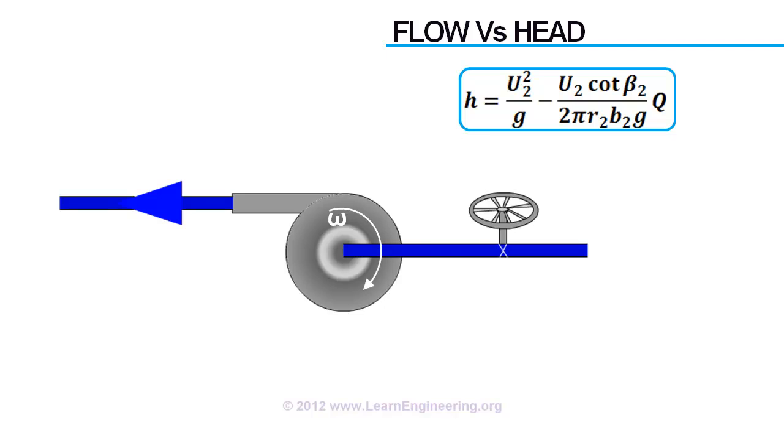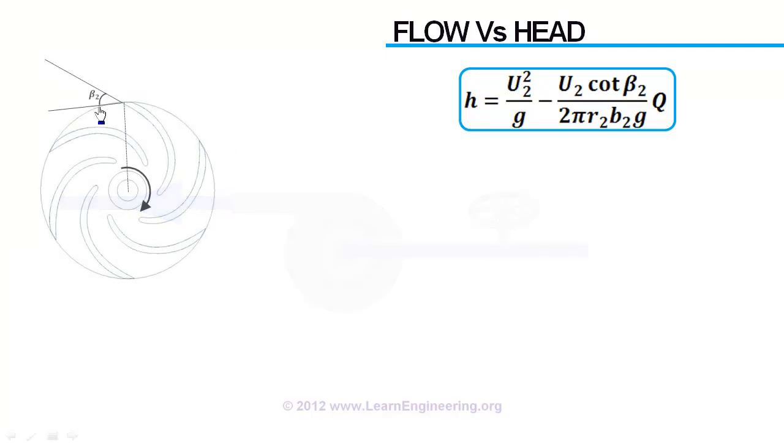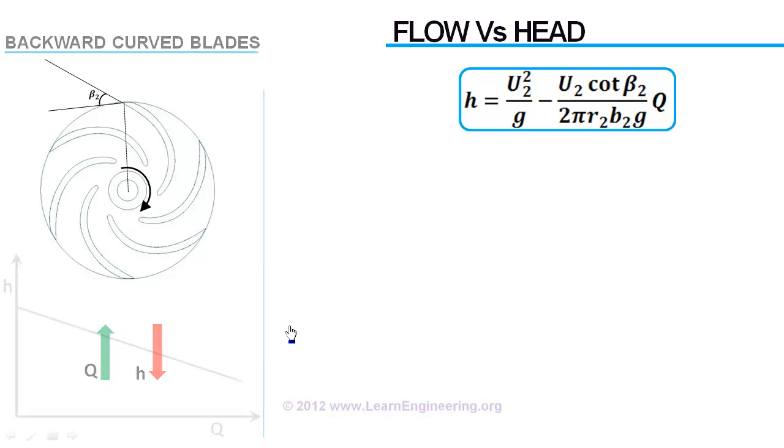First case, if beta is less than 90 degrees. Since this term is positive in this case, pressure head decreases with increase in flow. These kinds of impellers are called backward curved.